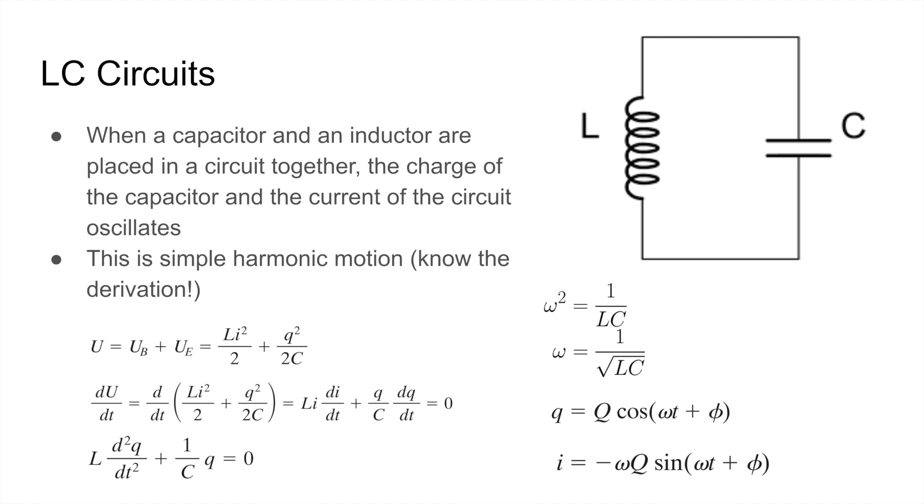Now since there's no resistance in this circuit, when we take the derivative of U over time, we get the power which is equal to 0. So if we take the derivative of both sides, we just get LI times dI over dt plus Q over C times dQ over dt equals 0. Now since I is equal to dQ over dt, we can cancel that out from both sides, and we get L times d squared Q over dt squared plus 1 over C times Q equals 0.